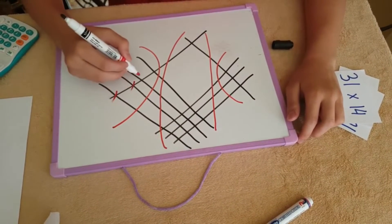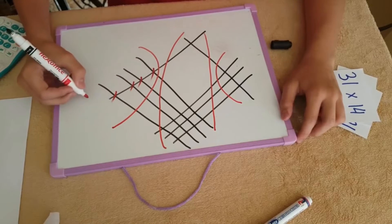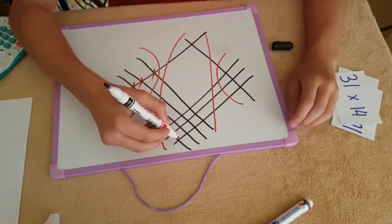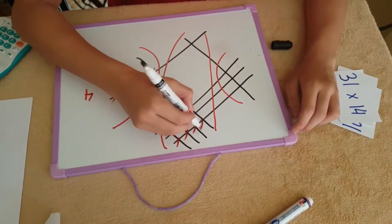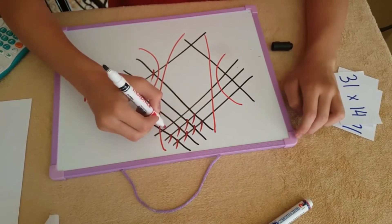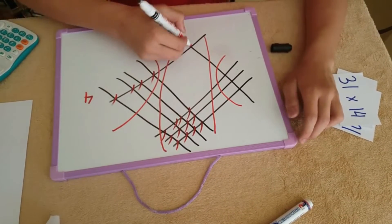1, 2, 3, 4. Then 1, 2, 3, 4, 5, 6, 7, 8, 9, 10, 11, 12, 13.